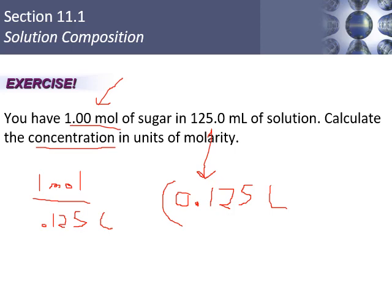So x = 8 moles per liter, written as 8.00 molar. You have three significant figures in 1 mole and four in 0.125, so you keep the lower number — three sig figs — giving 8.00 M. That's the answer.